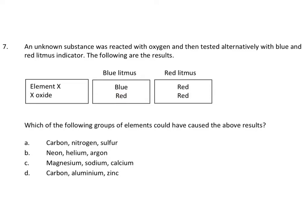But the oxide of X — it's red in blue litmus, which means it is an acid. So it's an acidic oxide. Acidic oxides are non-metal oxides, found to the right of the periodic table.